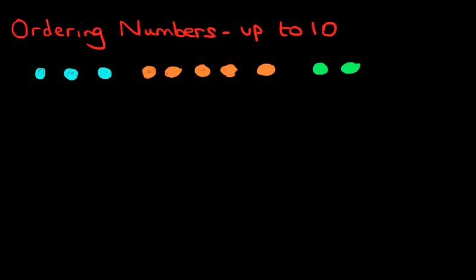Now how would we put them in order with the smallest number first? I'm sure you can have a look at these and say in which group is the smallest number — is it blue, is it orange, or is it green? But let's use the number line to do this.